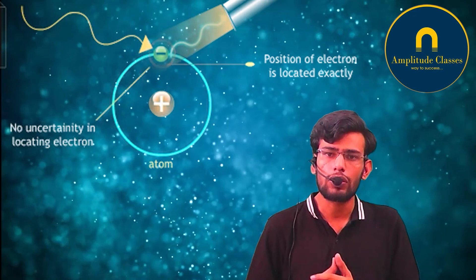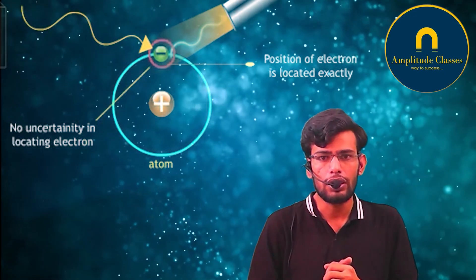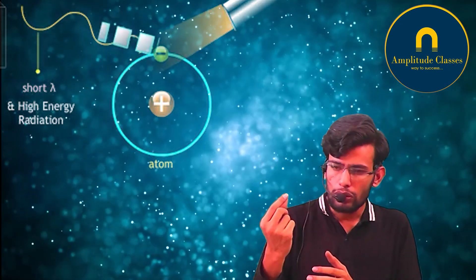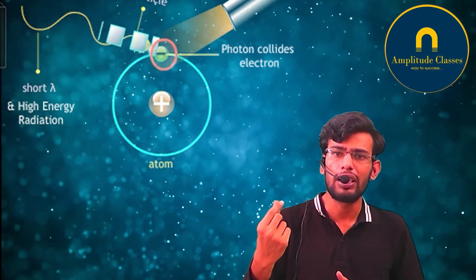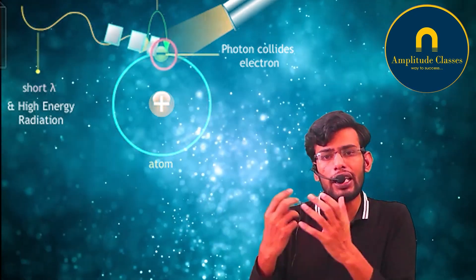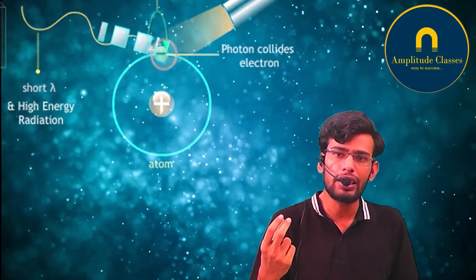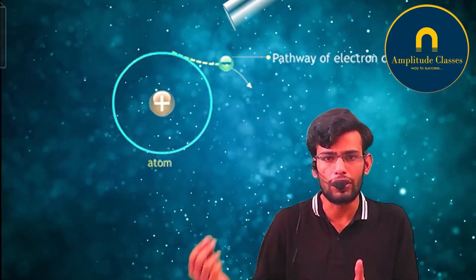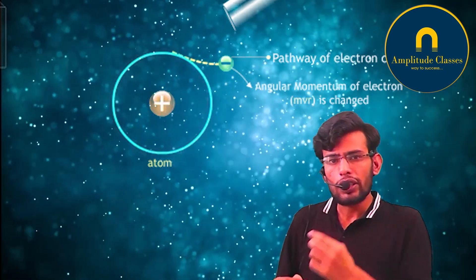If I want to measure the position of an electron very precisely, I need high-energy photons. When these high-energy photons strike the electron, they change its momentum in a drastic way. So if you are trying to measure the position of an electron accurately, its momentum uncertainty becomes larger and larger.